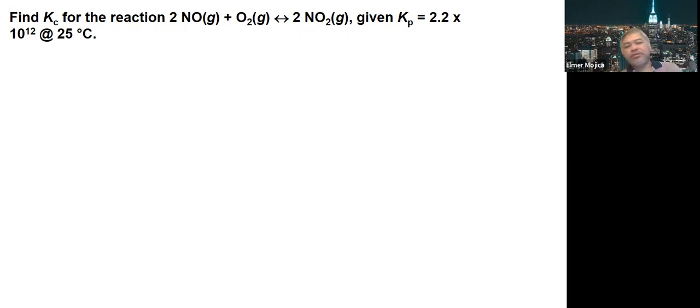So to solve this problem, we're going to write the relationship between the two, which is Kp = Kc(RT)^ΔN. If you're going to look at delta N, you have 2 + 1 = 3 on the reactant side, and you have 2 on the product side, so 2 - 3 will give you -1.